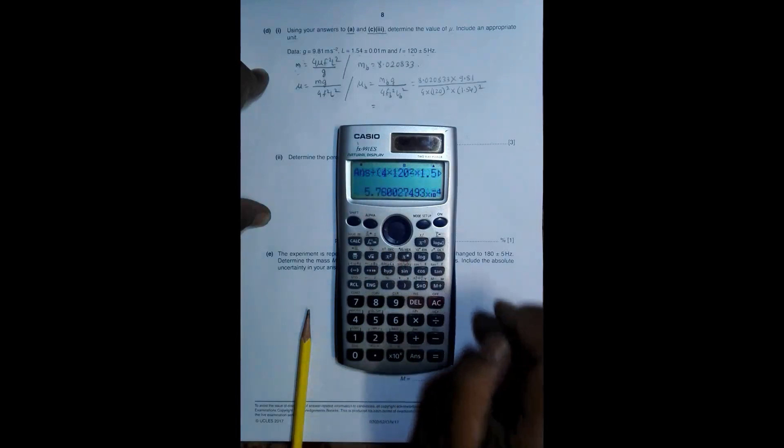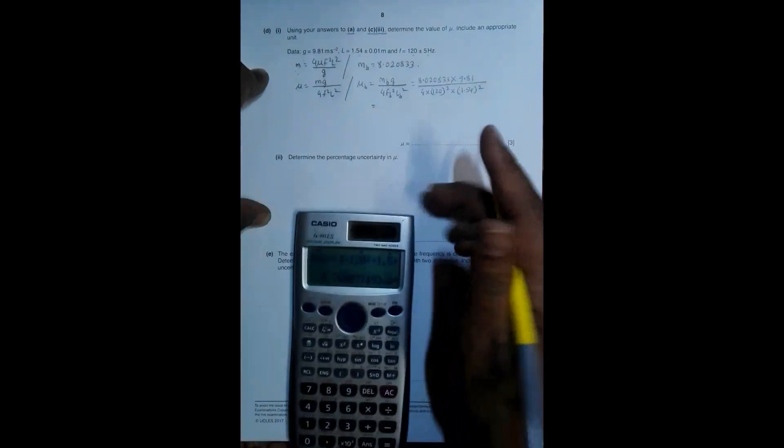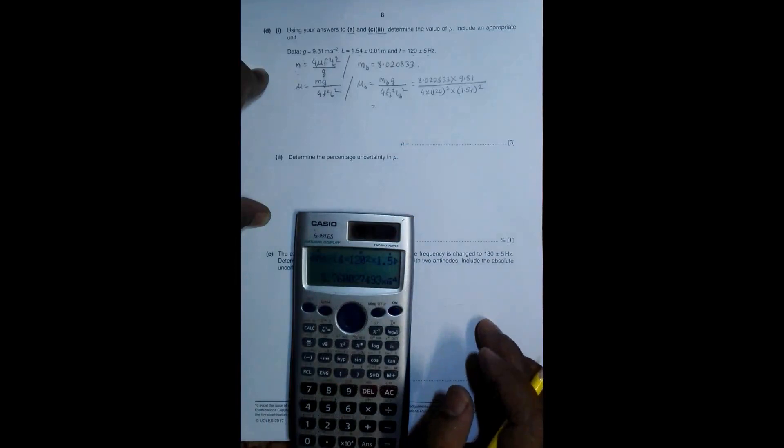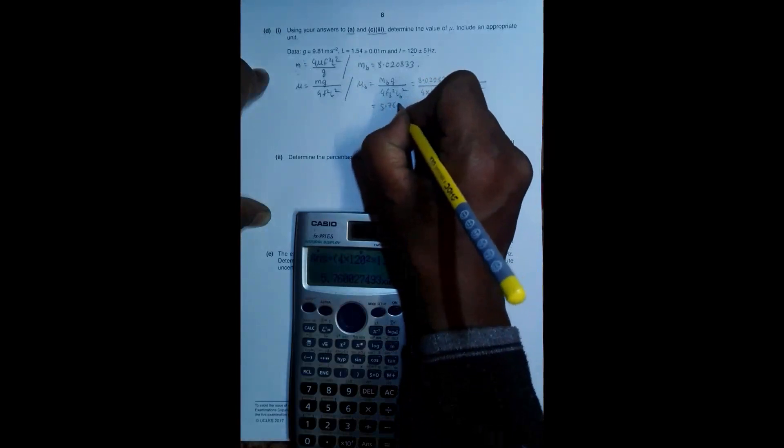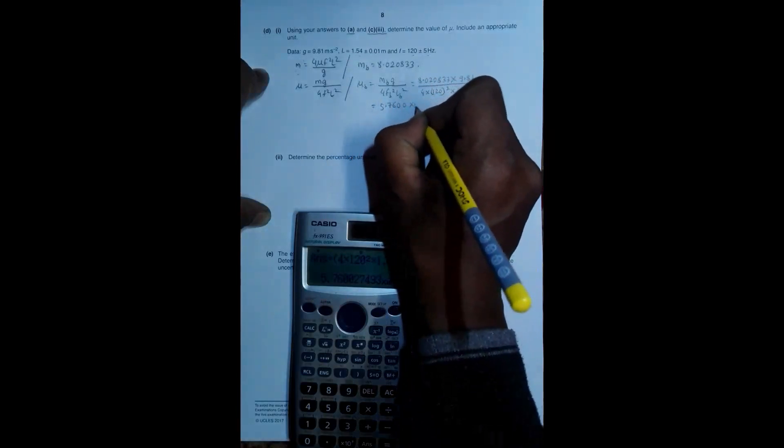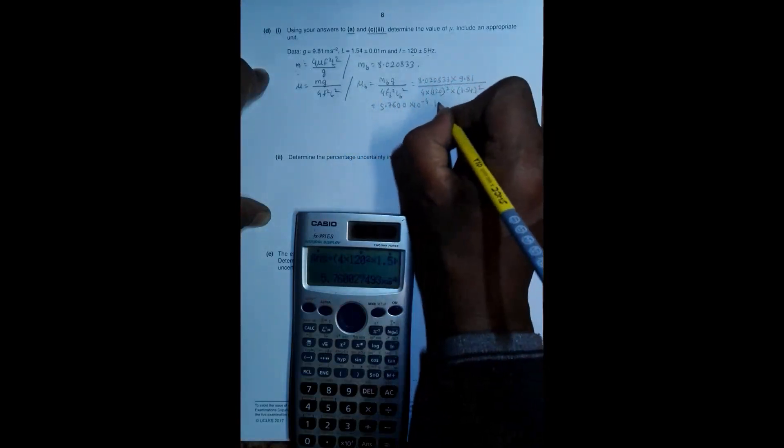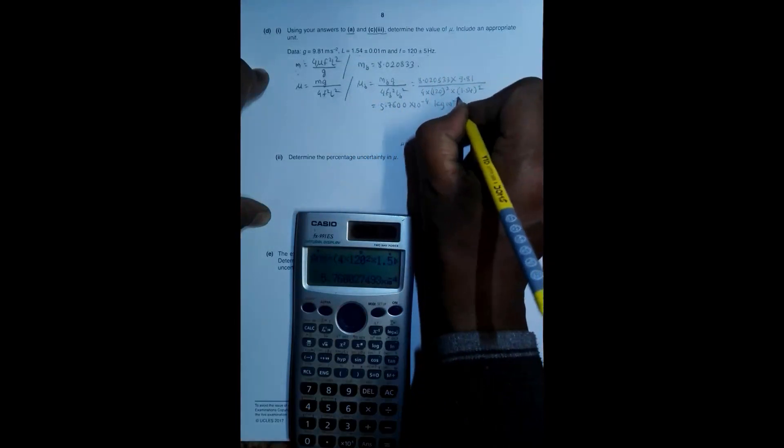I will have 8.020833 into 9.81 divided by 4 into 120 square into 1.54 square. Equal to, so this has come to be equal to 5.7600 into 10 to the power minus 4 kg per meter cube, sorry, kg per meter actually.